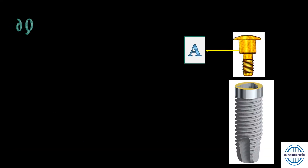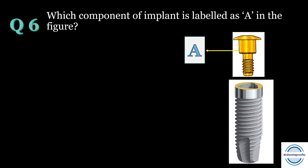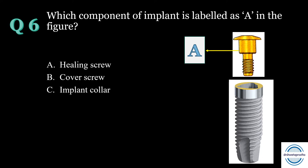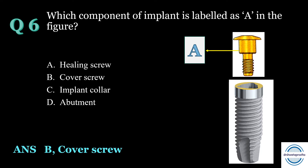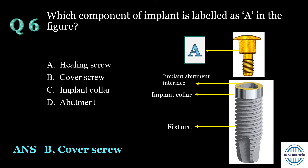Question number six: Which component of the implant is labeled A in the figure? Options: A) healing screw, B) cover screw, C) implant collar, or D) abutment? The answer is B — the cover screw. The parts of the implant are: the fixture (body of the implant), the implant collar, the implant abutment interface, and the cover screw — the yellow portion — which is placed in the implant after surgery one.